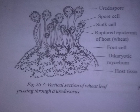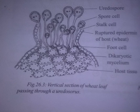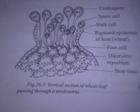From the substomatal vesicle, a number of branches of dikaryotic hyphae arise, which form a mycelium. This mycelium within 6 to 10 days produces a fresh uredospore. The uredospores are also called repeating spores because they produce successive crops of uredospores in a season. After the repeating spore stage, it goes into the teliospore stage, which will be described in the next class. Thank you.